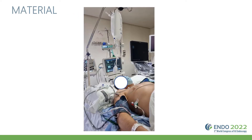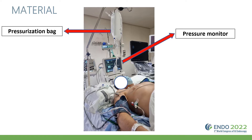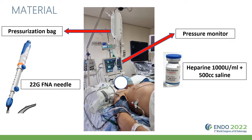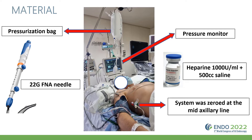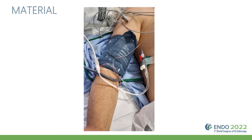It is important to list the materials necessary for this procedure. First, we need a pressure monitor, which is important to see the different measurements in the different veins. We also need a pressurization bag, and we use a 22-gauge FNA needle to perform the puncture in the different veins. We use heparin-diluted saline, and importantly, the system must be zeroed at the mid-axillary line. In this photograph, you can see the system more closely.